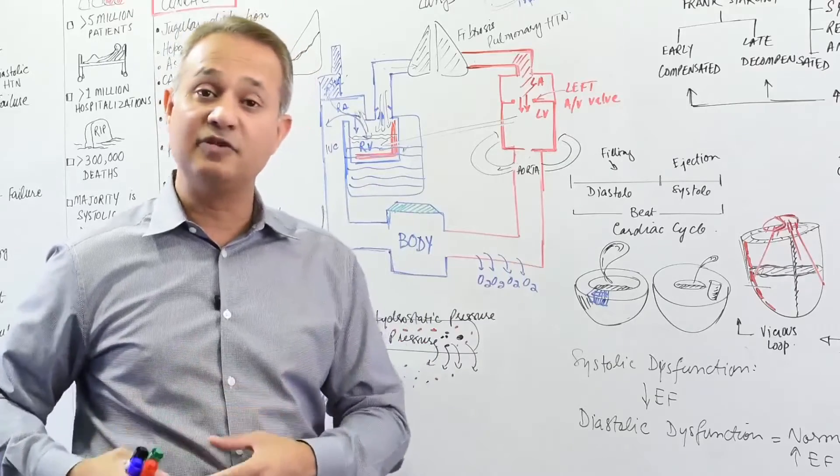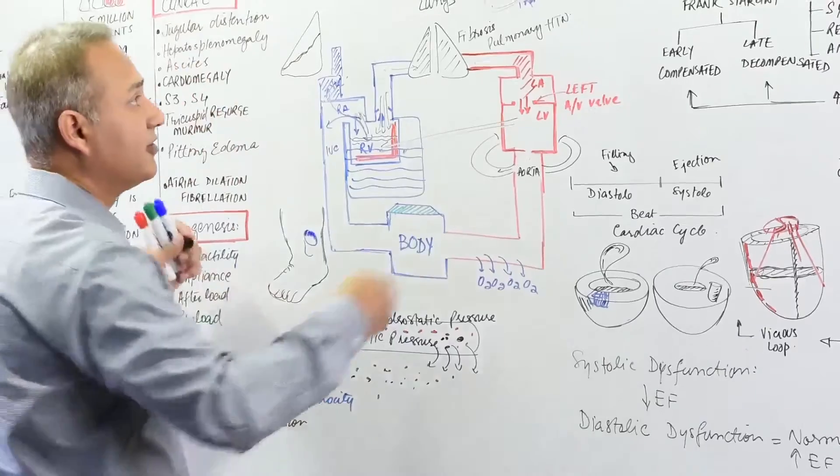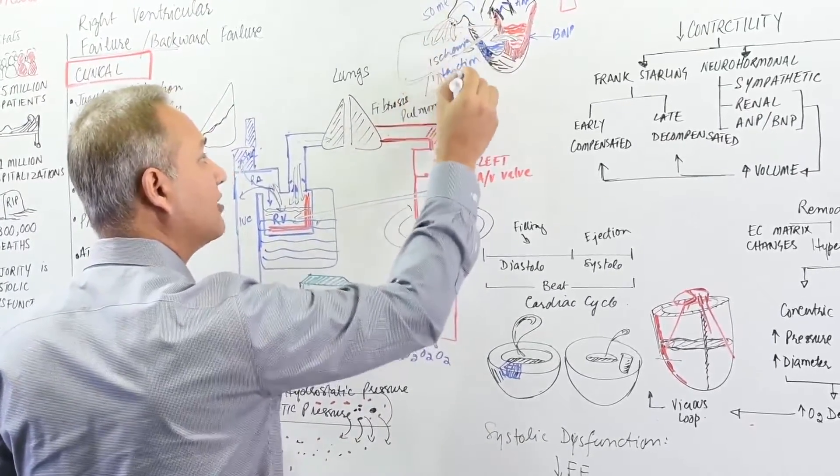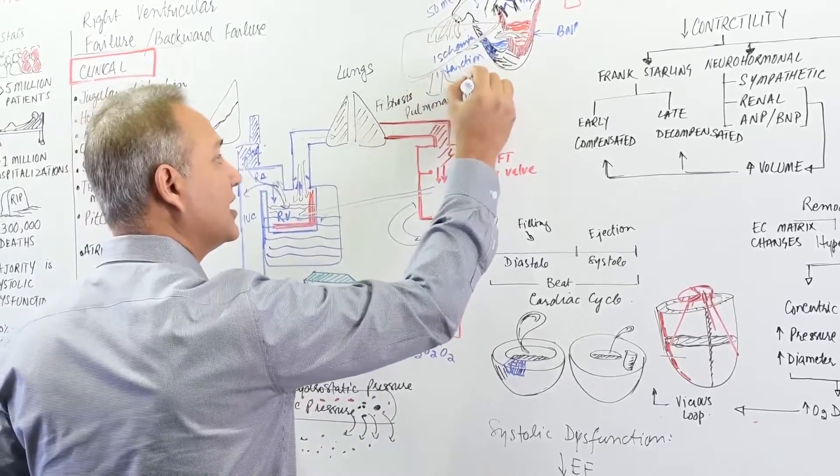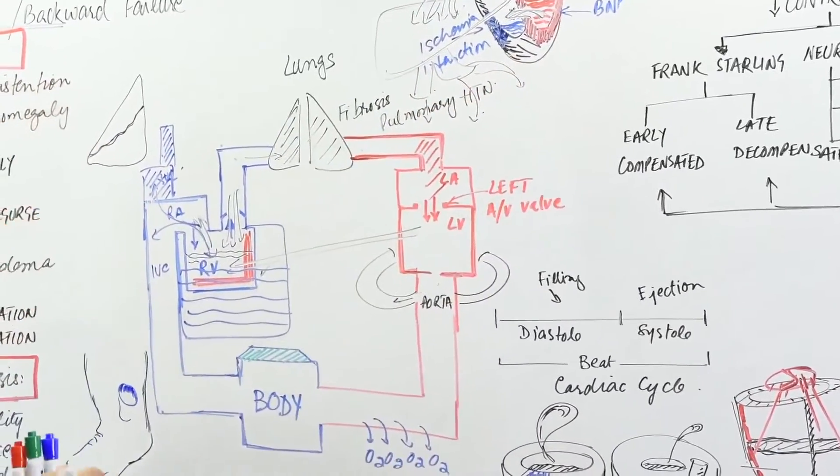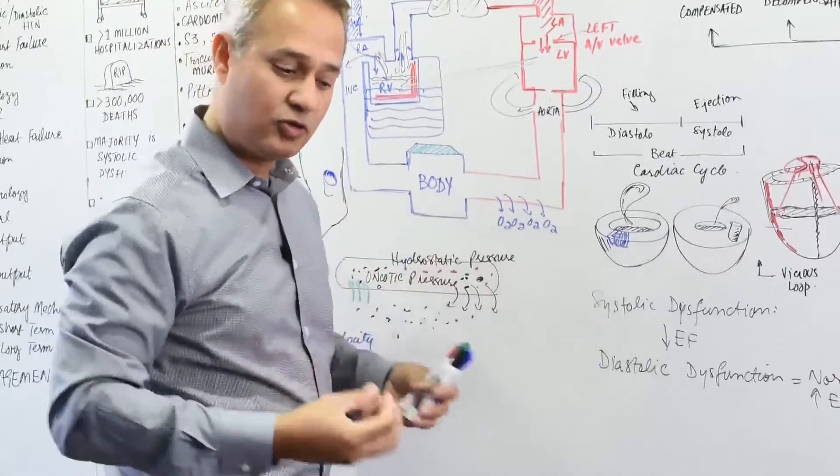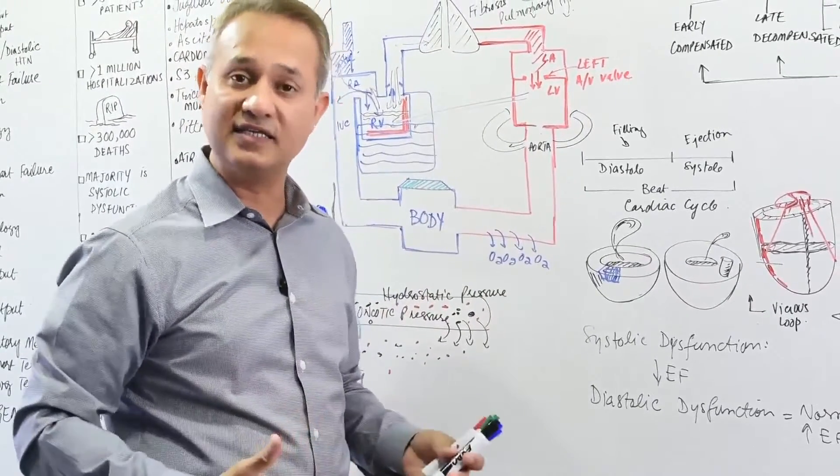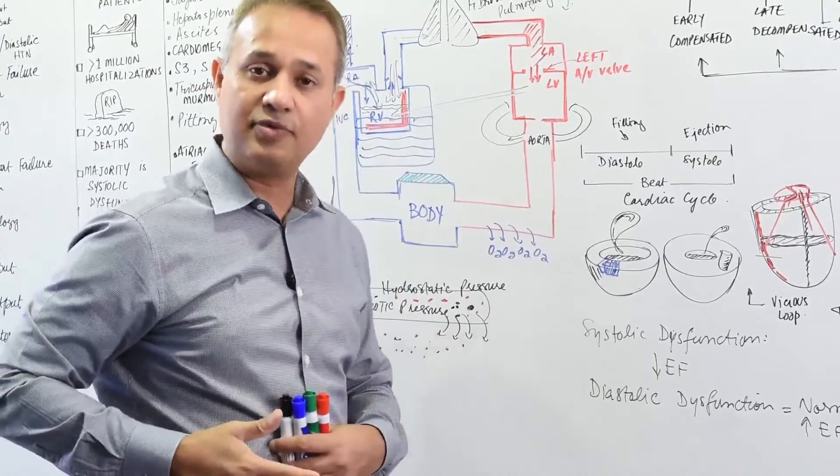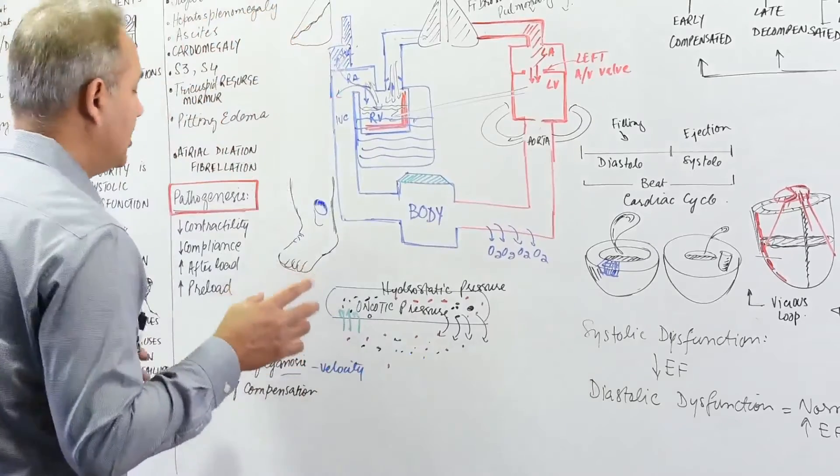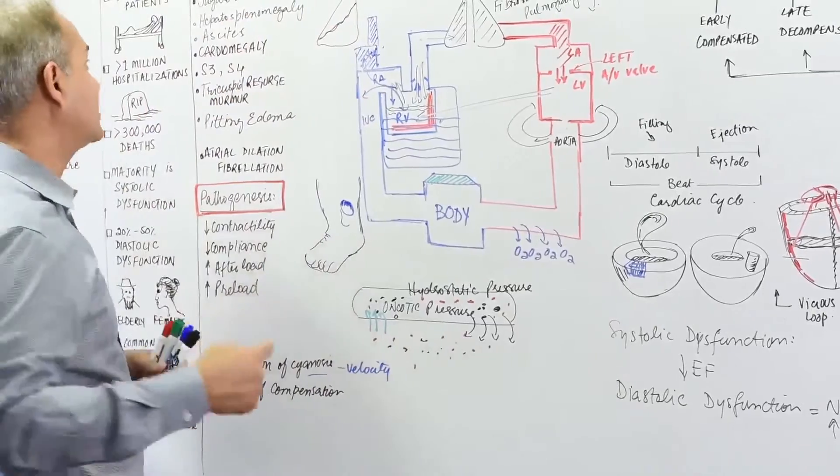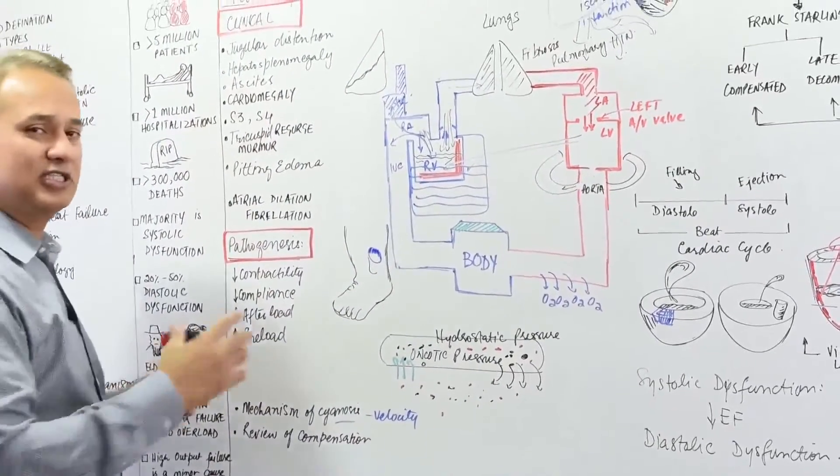One more thing would happen is ascites. Why would ascites occur? If the blood that needs to go back to the liver and from there to the heart is not happening, then the blood is going to stay in the veins which are collecting blood from the GIT system. As the blood starts pooling in those veins, it is going to start oozing out there as well. Ascites would develop. You can palpate for the ascites, you can tap for the ascites. Hepatosplenomegaly would develop, hepatojugular reflux will be present, pitting edema will be present - all signs.